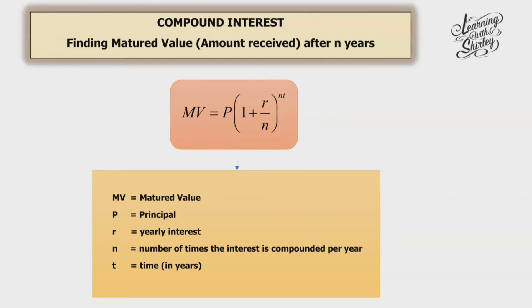First of all, we need to memorize and understand this formula: MV = P(1 + r/n)^(nt). MV stands for matured value, which is the compound interest plus the principal. P is the principal — the money put in at first. R is the yearly interest rate. N is the number of times the interest is compounded per year, and T is the time in years.